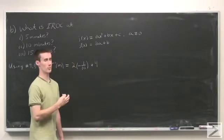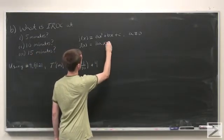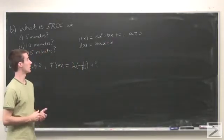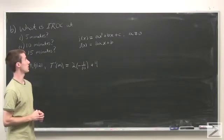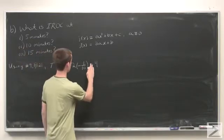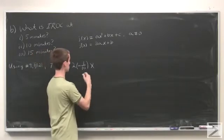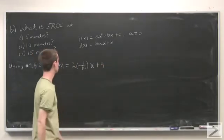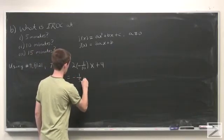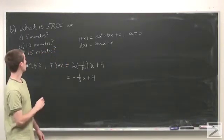I made an error earlier. I wrote 2a + b, but it's actually 2ax + b. Without that x, it would be a constant, and the derivative of a quadratic is not constant. So this is 2 times -1/10 times m plus 4, or -1/5 m + 4.